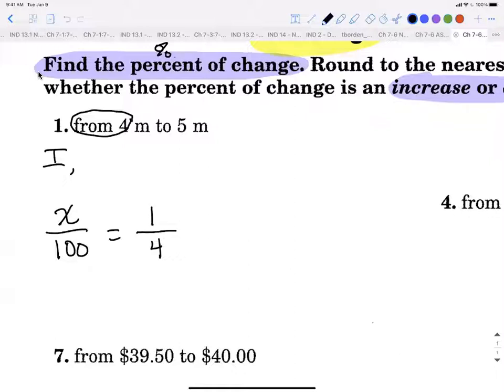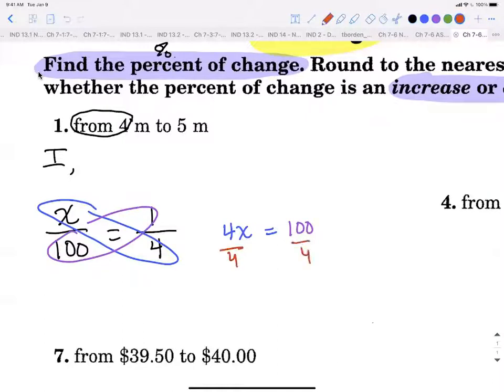And then you just do what we did yesterday. So we're going to cross multiply with our x and we're going to get 4x equals, and then we're going to cross multiply the other way. One times 100 is 100. And then we are going to divide by four and divide by four and we get x equals 25. And so the other half of our answer is 25 what? Percent. And then that is what you would circle as your final answer. The I for increase. And then your percent is written as a percentage.